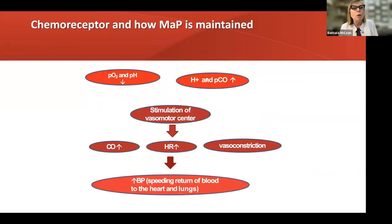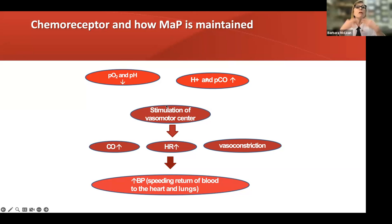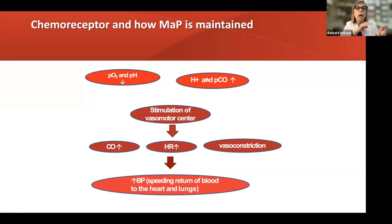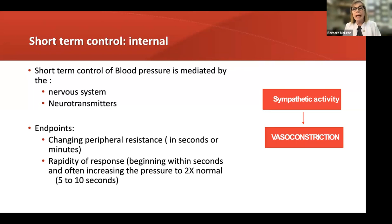When you're hypoxemic or acidotic — PO2 down, pH down, or metabolic acid (hydrogen ion) up, or PCO2 up — you're going to stimulate your vasomotor center. That vasomotor center stimulates the sympathetic nervous system and neurotransmitter release, giving tachycardia and increased cardiac output. This should promote vasoconstriction — more arterial than venous — which then speeds and promotes the return of blood from artery through capillary to vein back to the right heart. Sympathetic activity and vasoconstriction happen in seconds to minutes.